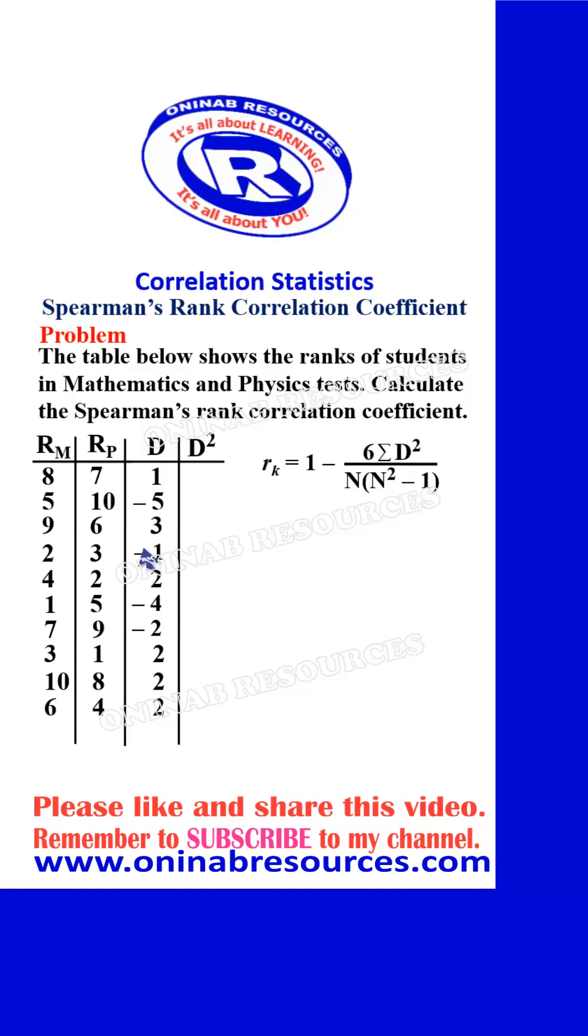For d squared, we square this: 1 squared gives 1, negative 5 squared gives 25, 3 squared gives 9, negative 1 squared gives 1, 2 squared gives 4, negative 4 squared gives 16, negative 2 squared gives 4, 2 squared gives 4. We then add d squared, which is representing the sigma d squared. Summing them up, we have 72.